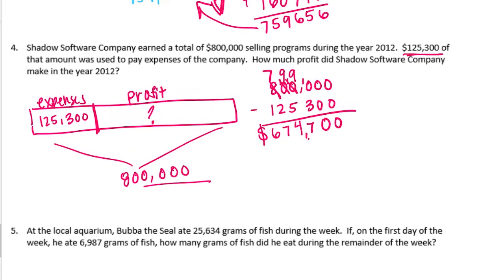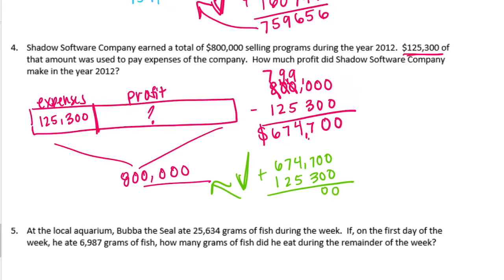Let's make sure that's true by doing a check: 674,700 plus 125,300. We need to make sure it adds up to 800,000. 0 plus 0 is 0. 0 plus 0 is 0. 7 plus 3 is 10, carry the 1. 1 plus 4 plus 5 is 10, carry the 1. 1 plus 7 plus 2 is 10, carry the 1. And 1 plus 6 plus 1 is 8. So we do get 800,000 and our final answer is $674,700.